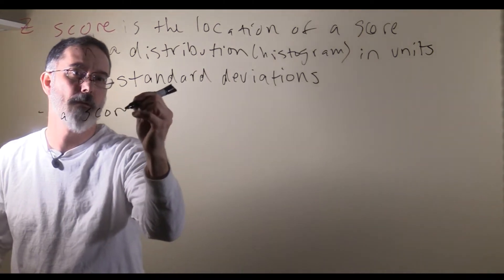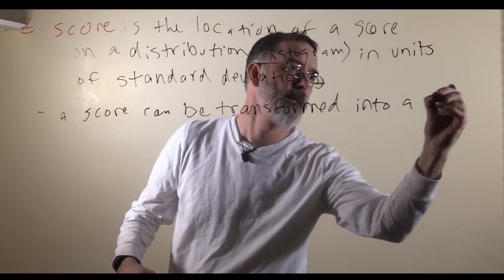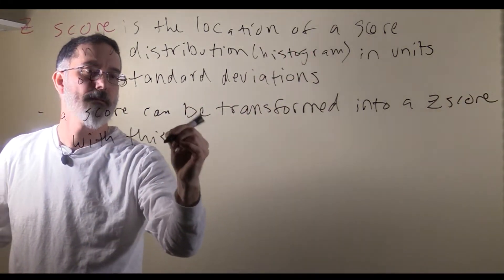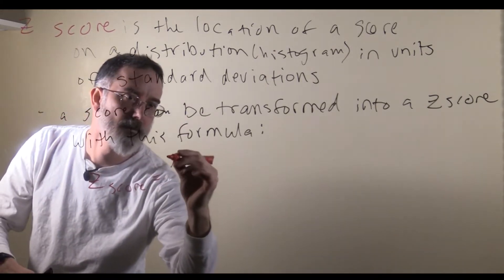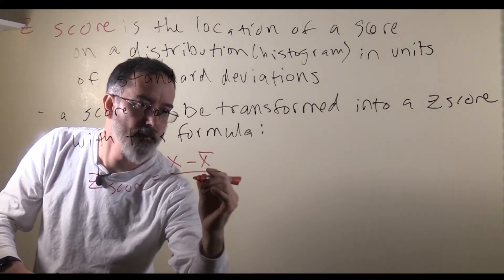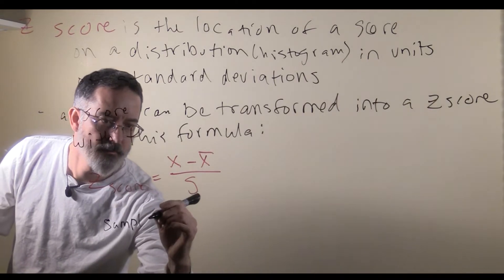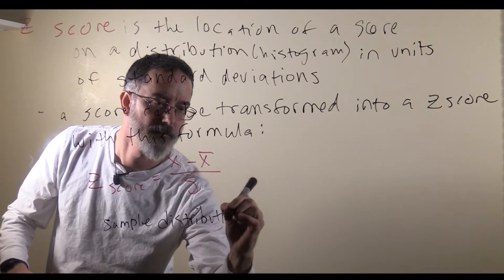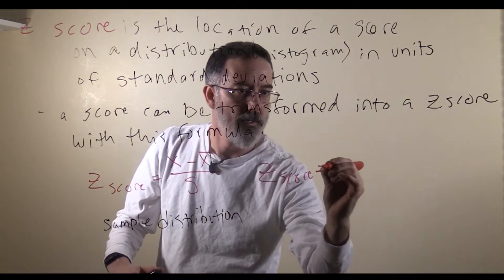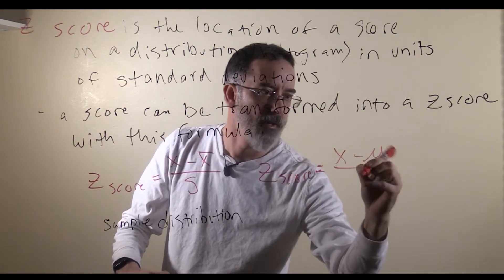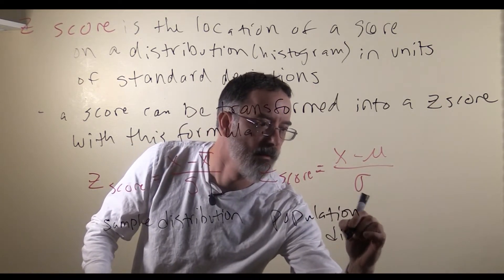A score can be transformed into a z-score with this formula: z equals the score minus the mean, divided by the standard deviation. That formula is set up for a sample distribution. There is also a formula that is basically the same for populations: z equals the individual score minus the population mean, divided by the population standard deviation.